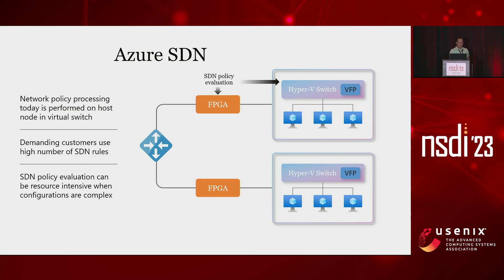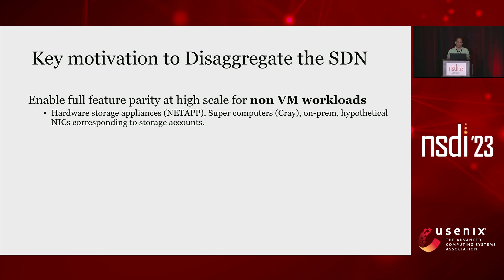Moving on to the first slide, which gives an introduction about how we do SDN in Azure today. Today in Azure we have host-based SDN, which is powered by VFP and hardware accelerators sitting on FPGAs. This provides us a flexible, low-latency platform for doing all different kinds of SDN functions and transformations we do for our customers. This framework works well and gives us flexibility to make changes and do custom transformations at a very rapid pace.